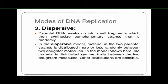In dispersive mode of DNA replication, segments of each parental strand are conserved and direct the synthesis of new complementary strand segments in a fragment-wise manner. This is not a continuous mode — breaks and small fragments are produced. The parental DNA breaks into small fragments which then synthesize complementary strands randomly, and parental strand material is distributed more or less randomly between the two daughter molecules.